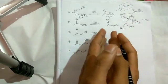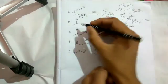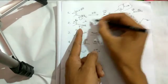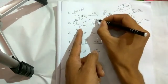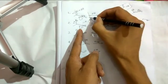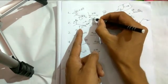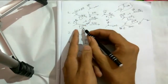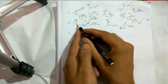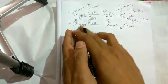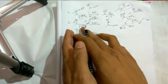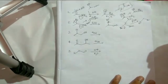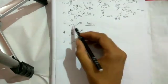You might write the mechanism as SN2, attacking directly to give the product — but these reactions are actually not SN2. They proceed via an SN1 mechanism. You first form a carbocation by involving the oxygen lone pair, which stabilizes the positive center. Then the nucleophile, for example RO⁻, attacks to give the product. Whenever you have an alkoxide group present, you cannot write SN2; it goes SN1.